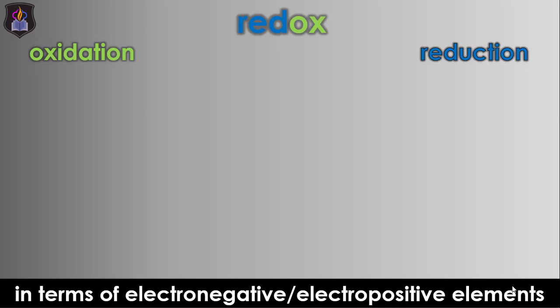The next concept is the addition or removal of electronegative and electropositive elements. Electronegative elements are elements, usually non-metals, that have the tendency of gaining electrons to become negative ions, while electropositive elements are elements, usually metals, with the tendency of losing electrons to form positive ions. Examples of electronegative elements are fluorine, chlorine, bromine, oxygen, iodine,